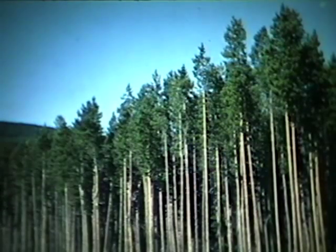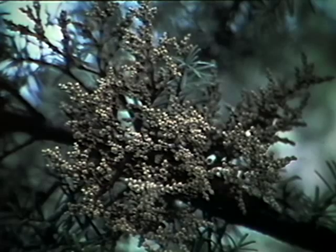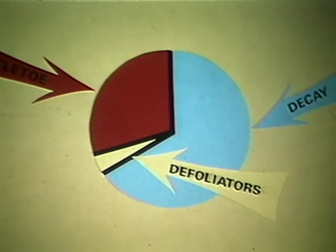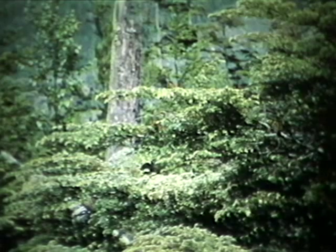Dwarf mistletoe is one of the most damaging of all the diseases or insects in the forest. It is a parasite which feeds and grows on living trees. On western hemlock and lodgepole pine, dwarf mistletoe destroyed a volume equal to about a quarter of the annual cut of these species, and causes a greater economic loss to our forests than all the other forest pests combined. The good news: dwarf mistletoe is more easily controlled than any other disease.